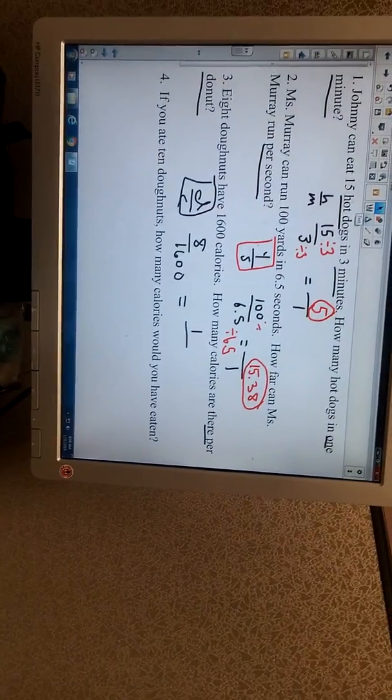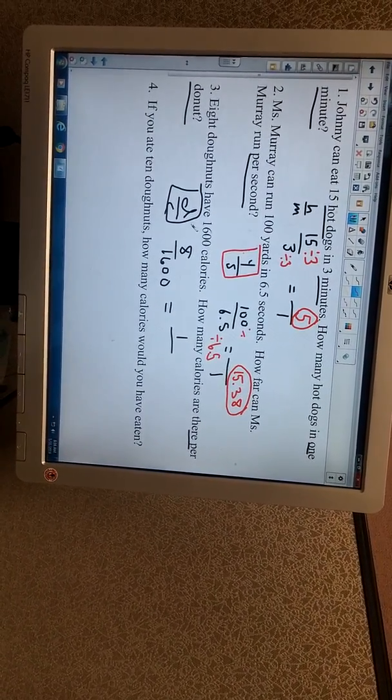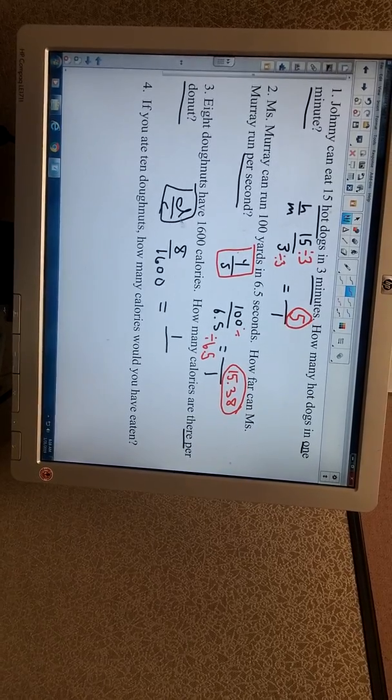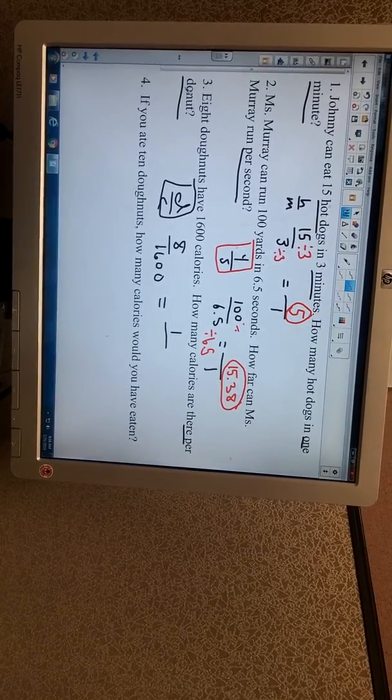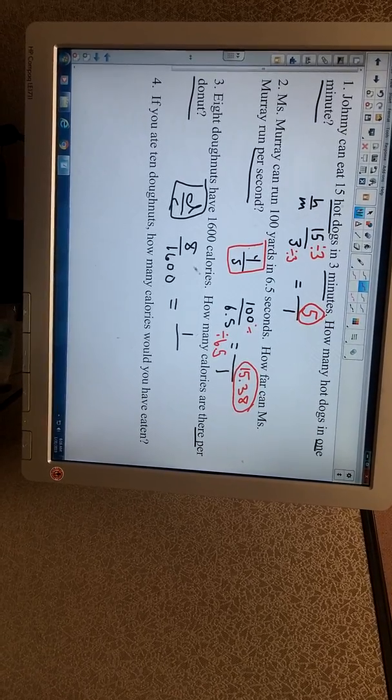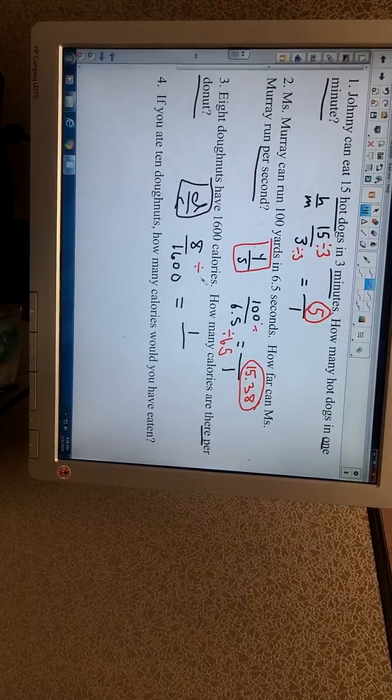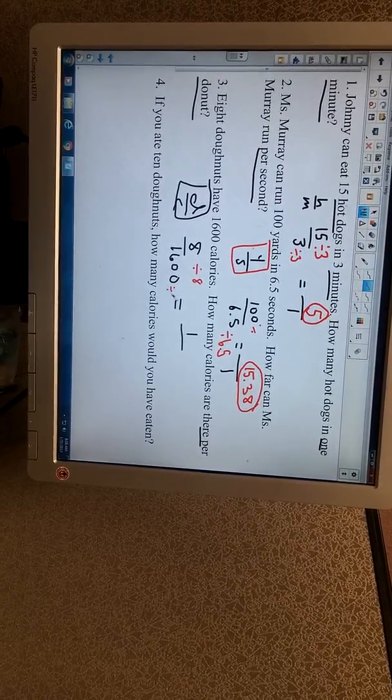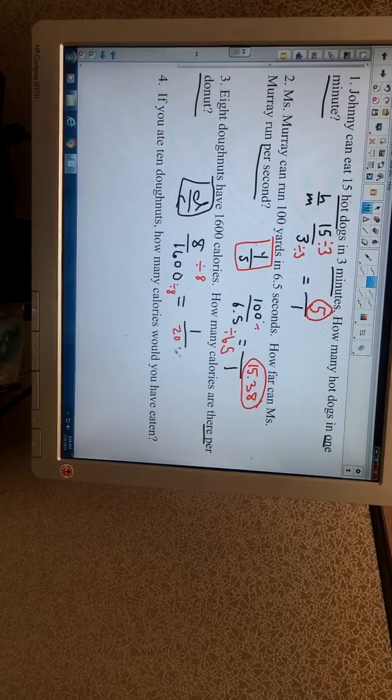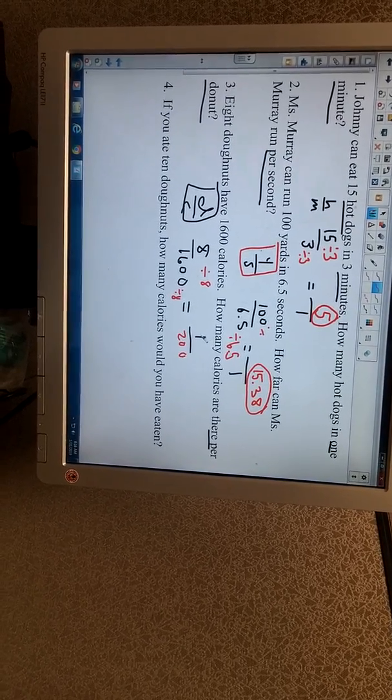Number three, it's a little bit trickier because you've got to read carefully. It says 8 donuts have 1,600 calories. My ticket is donuts per calories. How many calories are there per donut? So we're looking at one donut. And in this problem, we're keeping track of the donuts in the numerator. 8 divided by 8 gives us 1, 1600 divided by 8 gives us 200, which means there are 200 calories for every donut that you eat.